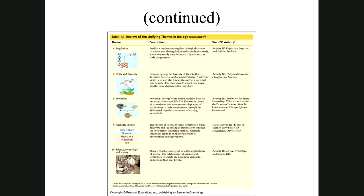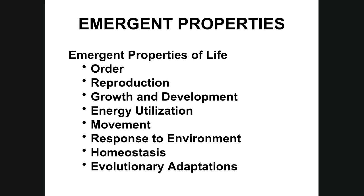Emergent properties of life: life is very orderly, especially at the cellular level. Everything must happen in a given order, otherwise the process doesn't work. When a cell needs a molecule, it converts molecule A to B, B to C, C to D, and D to the final product — a very orderly sequence.